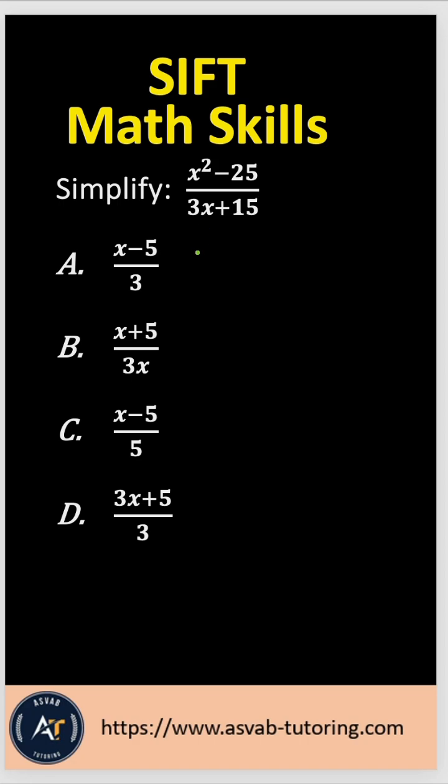you need to know the formula that is a square minus b square equal to a plus b times a minus b.